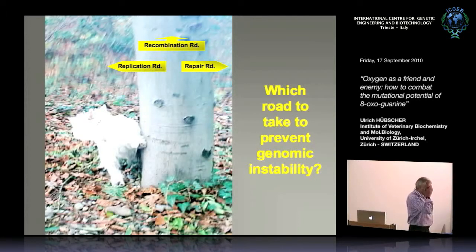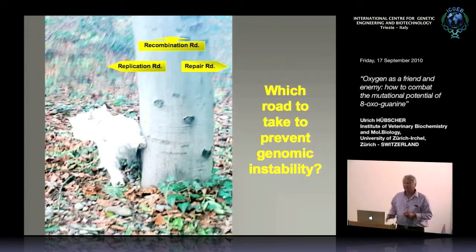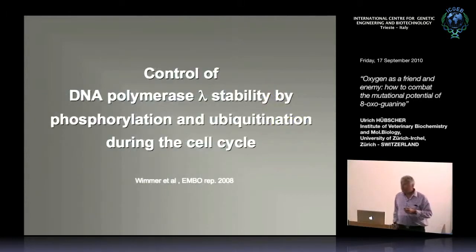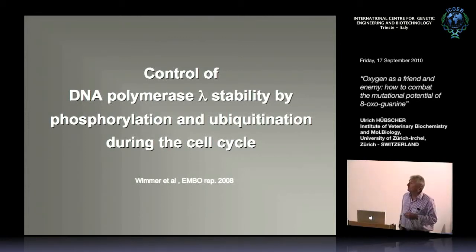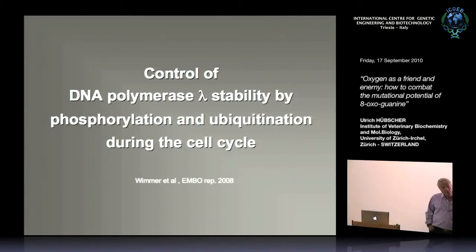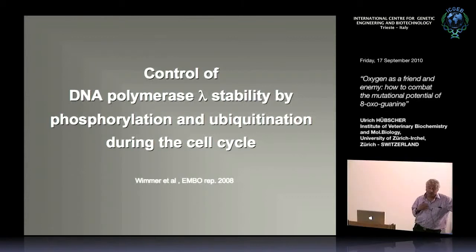How is this connected to replication and repair timing? There must be a mechanism by which the cell knows when to correct these lesions. Initial work by Isabelle Froeh in my lab, six years ago, used a small proteomic approach to identify proteins that pol lambda binds. Among others, she identified CDK2-cyclin A.